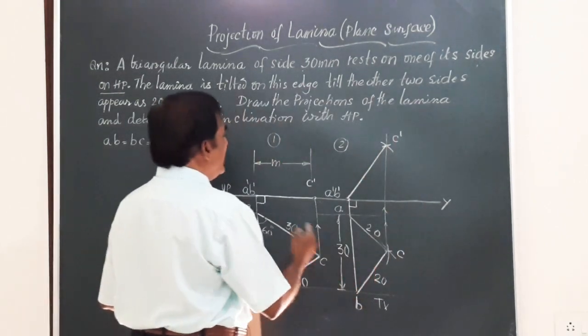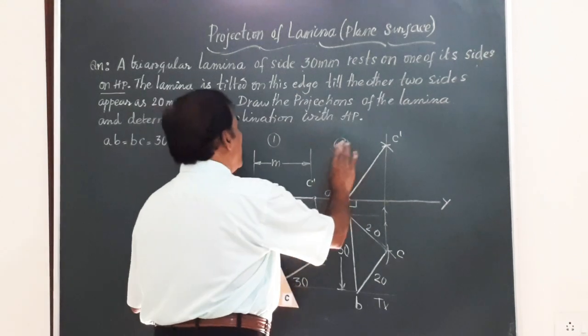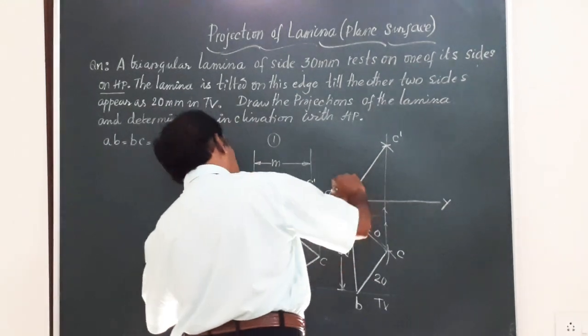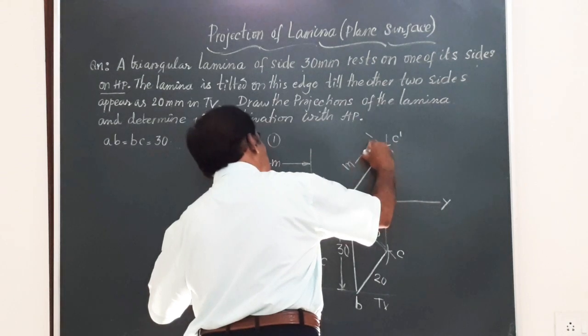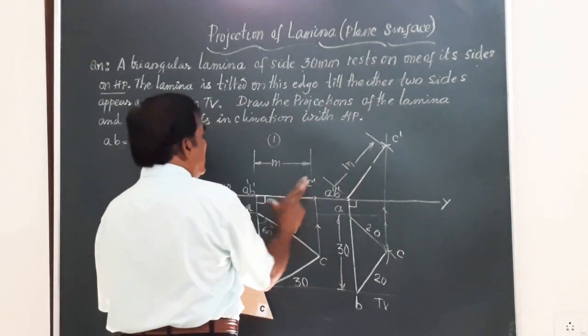I can strike an arc to cut the vertical line drawn through this point at C. Friends, if you join that, you will be getting A' B' C'. A' B' C' will have the same length as that of M. So, this M I will mark. Same mark. Same measurement.